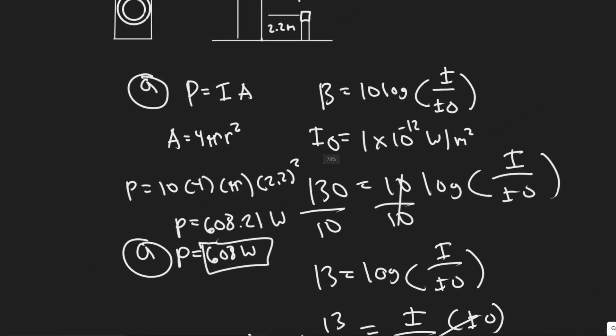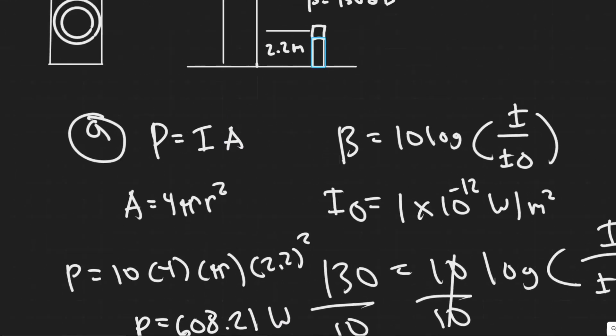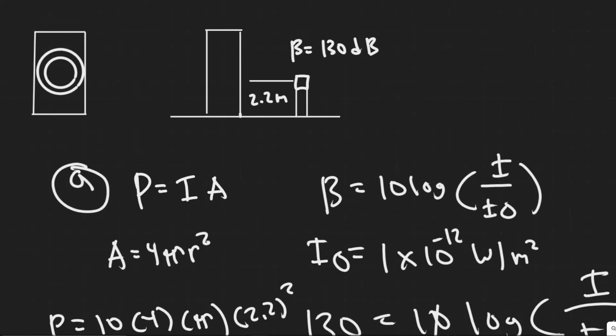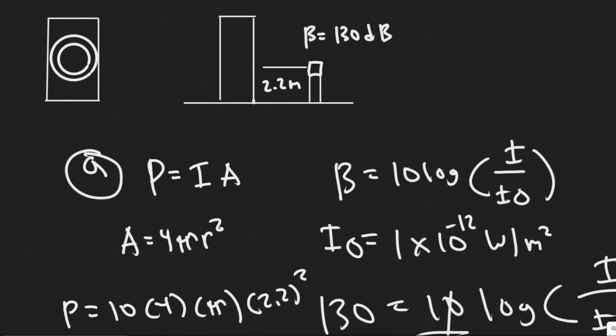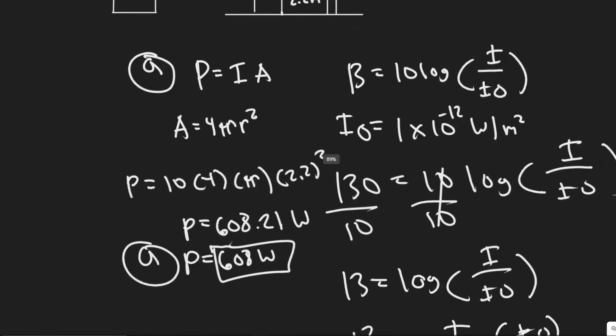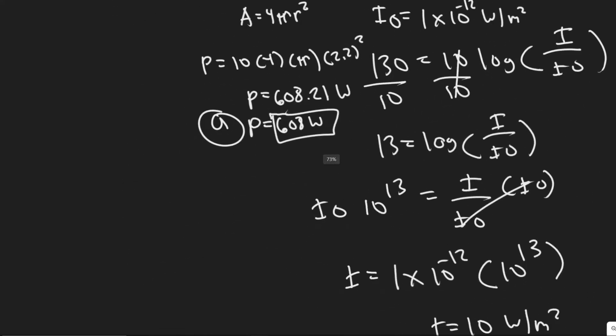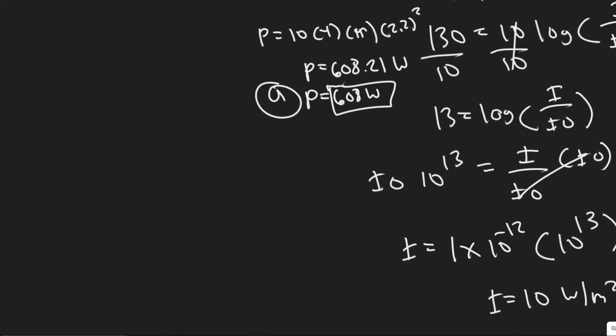So we knew all this stuff. We had to find the area, so how far out we were, and then the intensity at that point, which we solved by using this. So once we had beta, we could solve for the intensity, and then we just plugged it in to get the power output. So we know that. Now let's go ahead and do B.